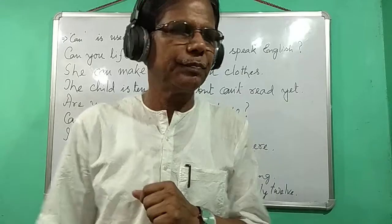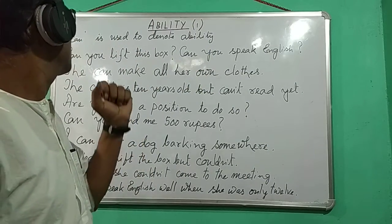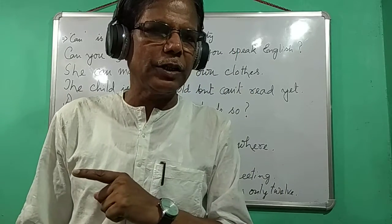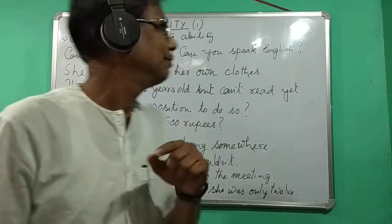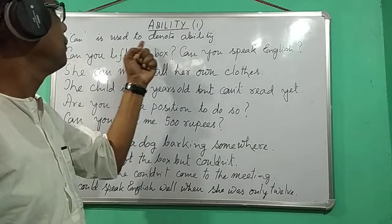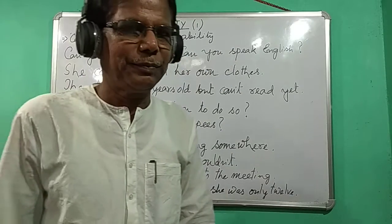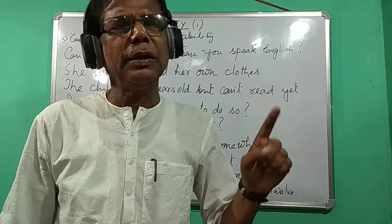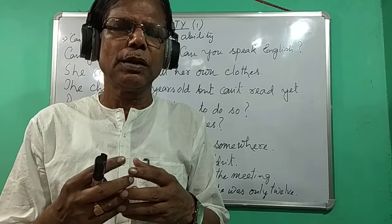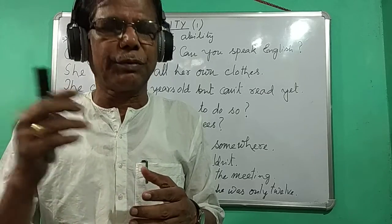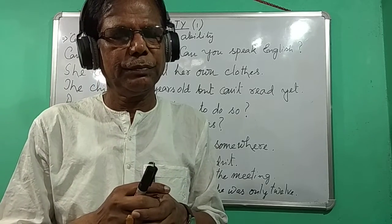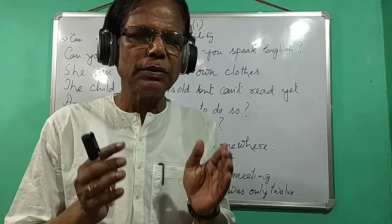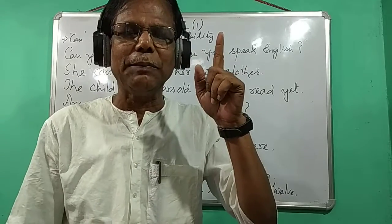Ability. One modal verb — an anomalous finite, a modal verb — is 'can'. Can is used to denote ability. Someone is able to do something, so he can do it.